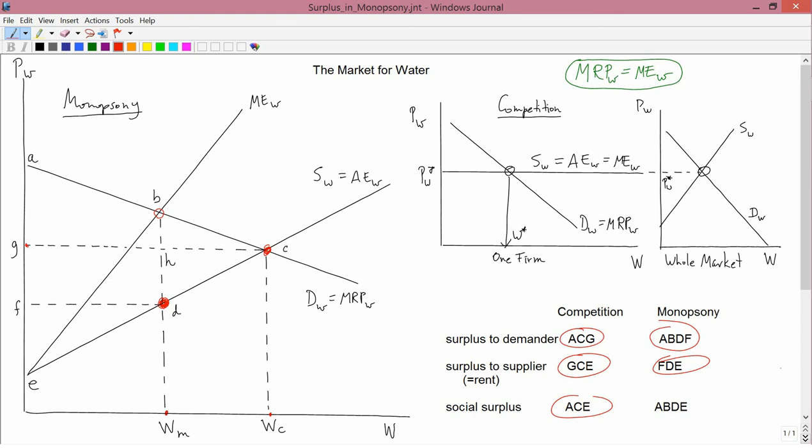And social surplus. Well, the social surplus is the sum of those two, which is going to be ABDE.